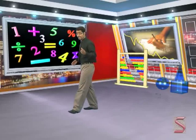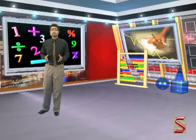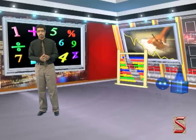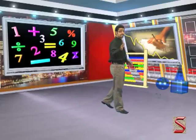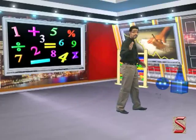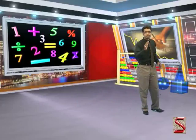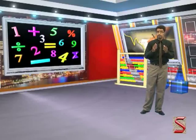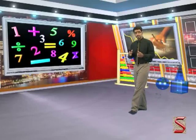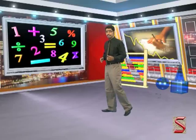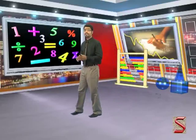Before we move on to the next topic, simple interest, we must first be very clear about these terms. The sum borrowed or lent is called the principal, which is denoted by P. The interest agreed per year as a percentage is called the rate of interest, and it is denoted by R.